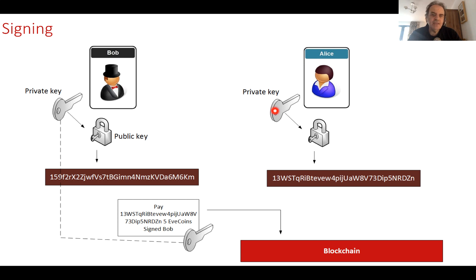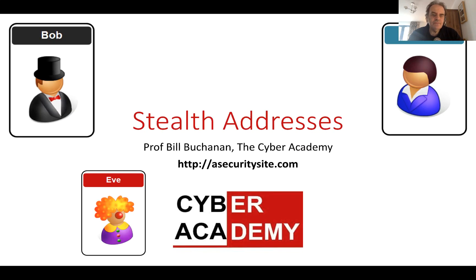If she wants to send on to someone else, she will use her private key to sign her transaction. The problem with Bitcoin is that these addresses can be seen and traced — if someone knows one of the addresses, it is possible to determine all of their transactions.